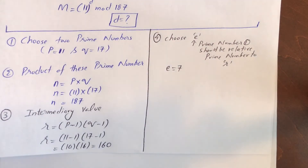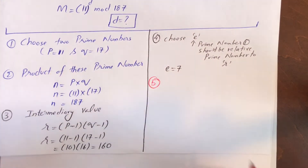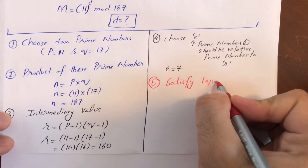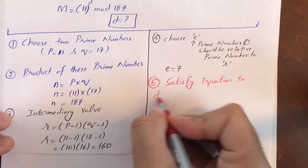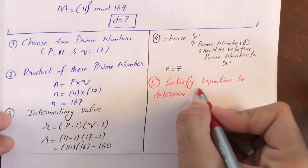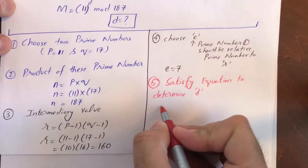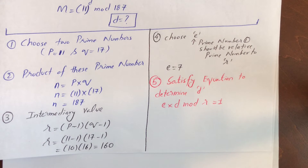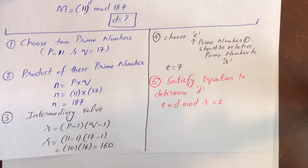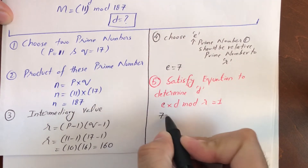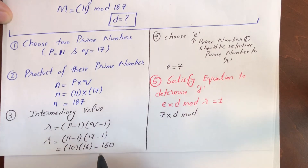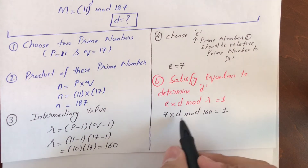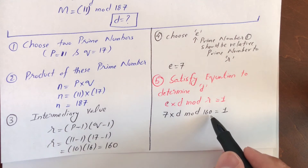Now the last and toughest step: we need to satisfy the equation E × D mod R = 1. Putting in the values: 7 × D mod 160 = 1. We need to find a value of D such that if you multiply it by 7 and take mod 160, the remainder is 1. So 7 × D should produce a value like 161 or 321 — something that when divided by 160 gives remainder 1.